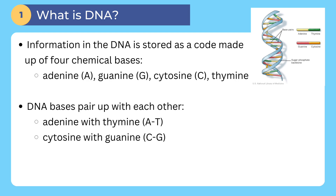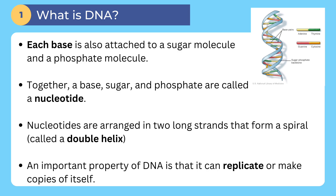The information in the DNA is stored as a code made up of four chemical bases such as adenine, guanine, cytosine, and thymine. DNA bases pair up with each other — adenine pairs with thymine, and cytosine with guanine. Each base is also attached to a sugar molecule and a phosphate molecule. Together, a base, sugar, and phosphate are called a nucleotide. Nucleotides are arranged into long strands that form a spiral, called a double helix. An important property of DNA is that it can replicate or make copies of itself.